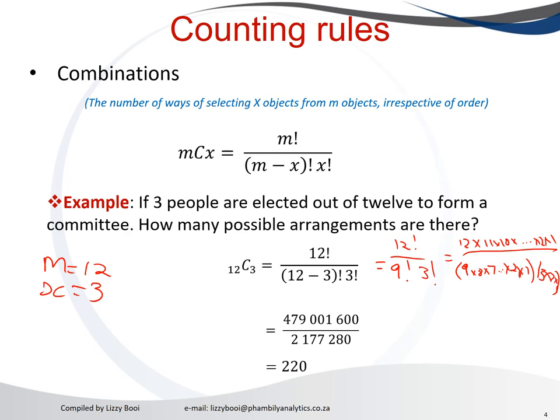The difference between the two, combination and permutation, is permutation, there is an order or preference. Combination, there is no order or preference. Thank you.